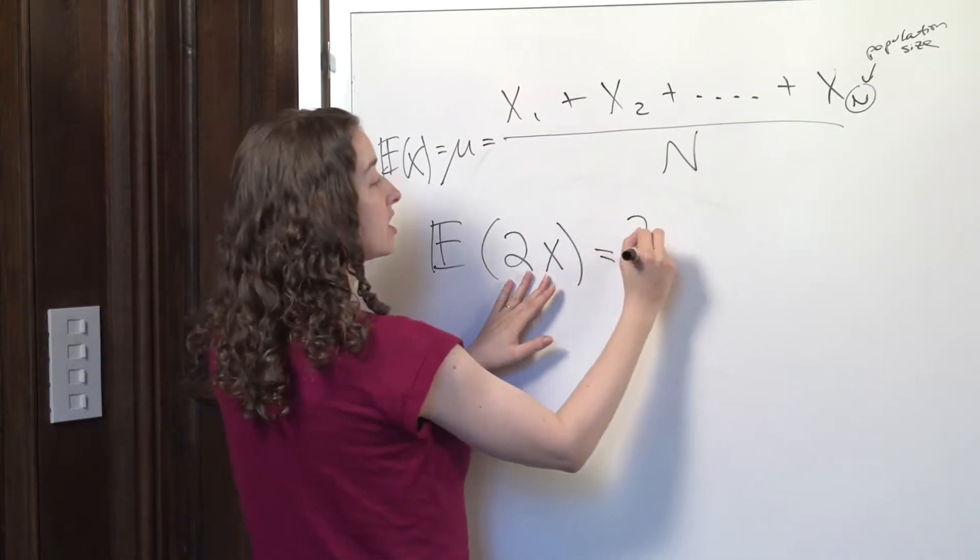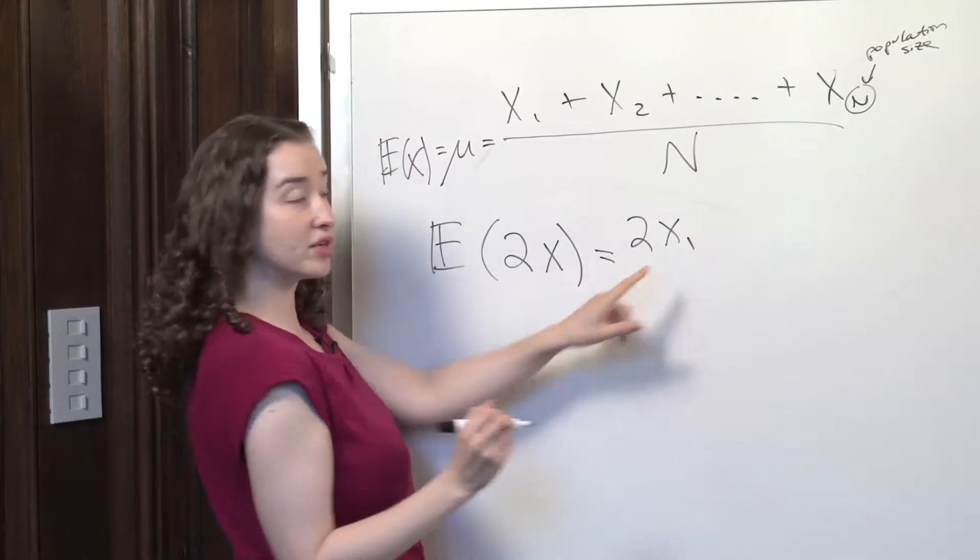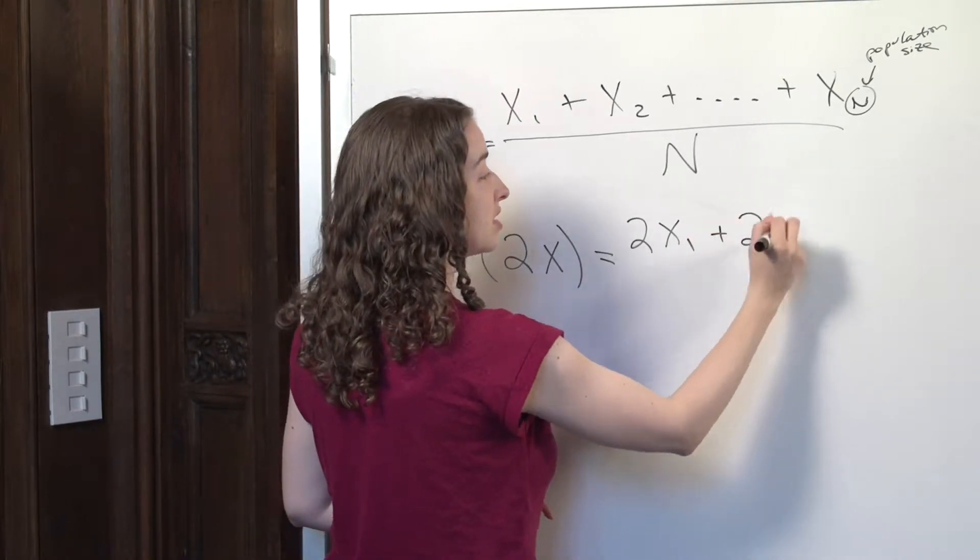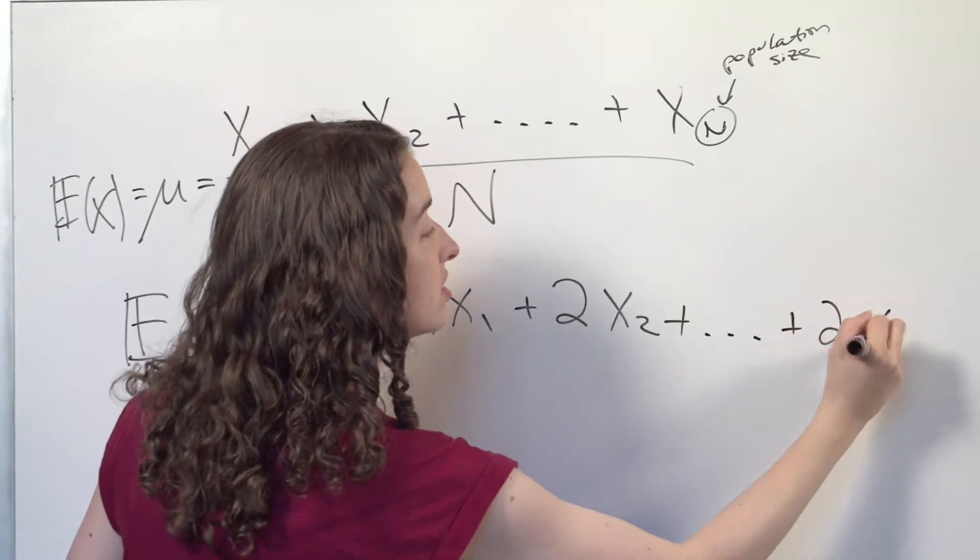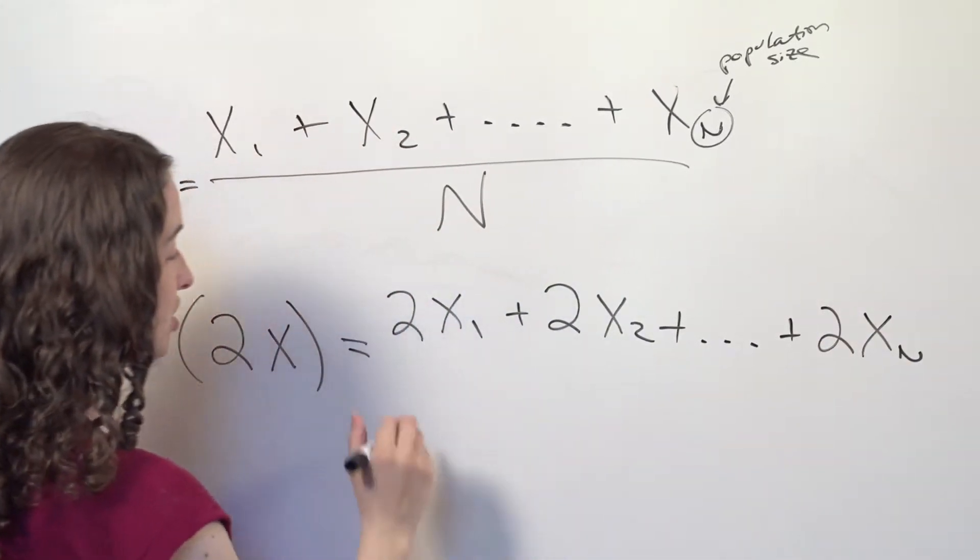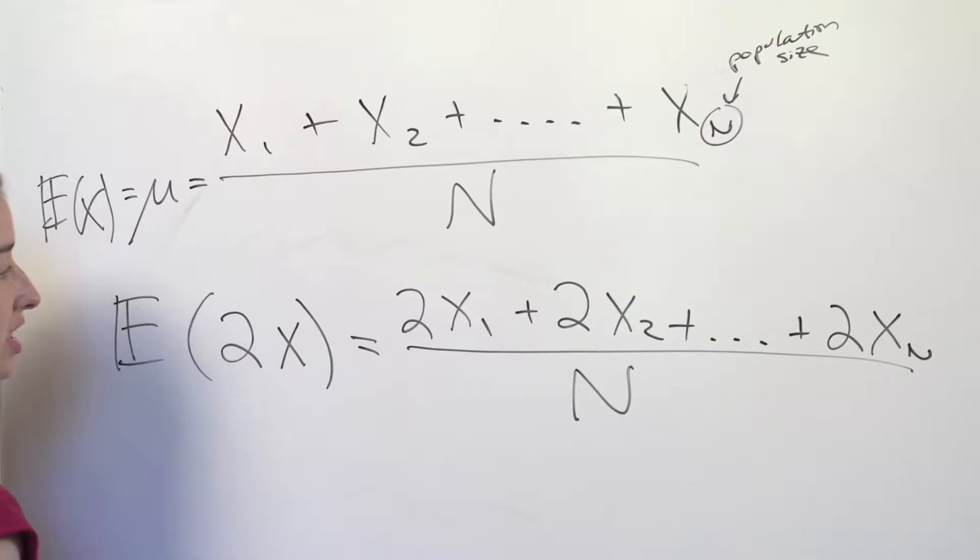I'm going to plug in 2 times the income for the first person in the population, plus 2 times the income for the second person in the population, et cetera. 2 times the income for each person in the population divided by how many people are in the population.